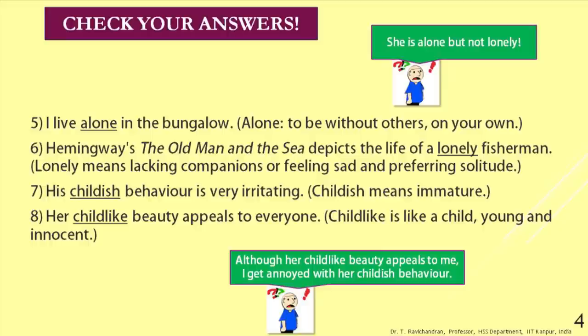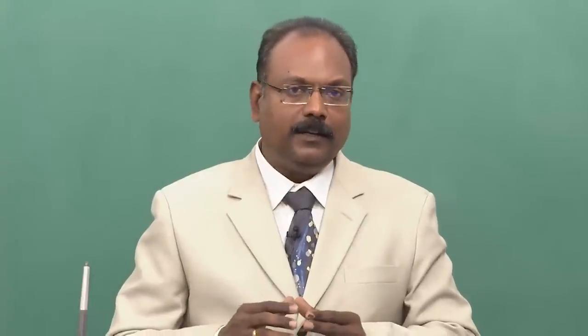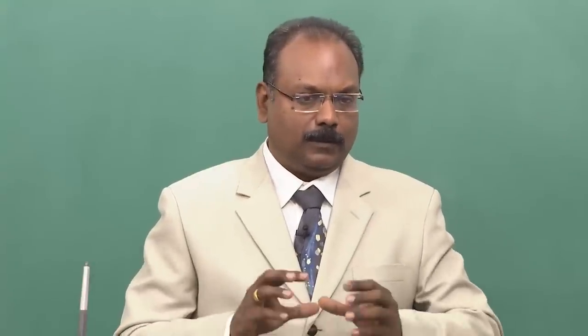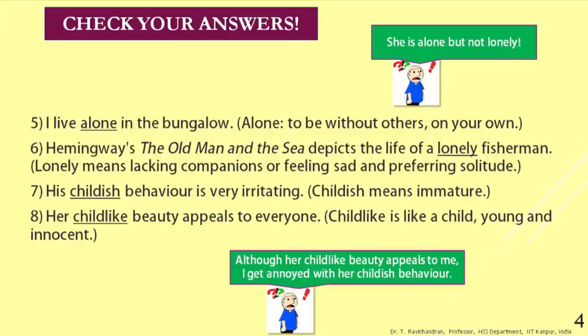The next pair is 'childish' and 'childlike'. The correct answer is: 'Childish behaviour is very irritating.' Childish means immature or lacking maturity. Whereas in the next sentence: 'Her childlike beauty appeals to everyone' — childlike means like a child: young and innocent. Do not confuse the usage of these two words in alternate contexts.